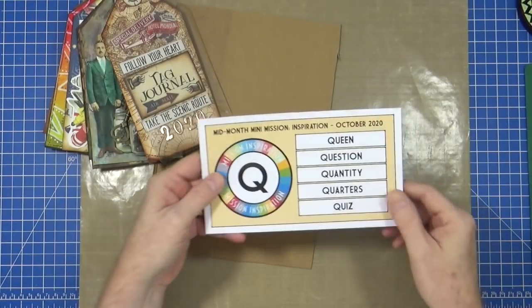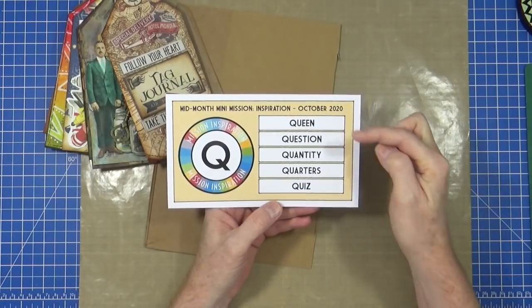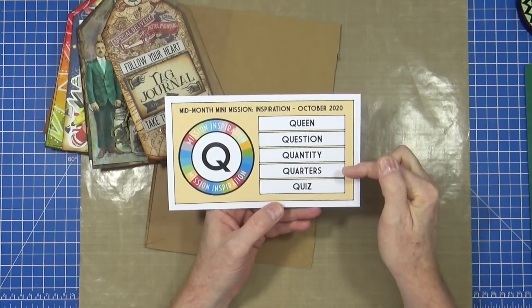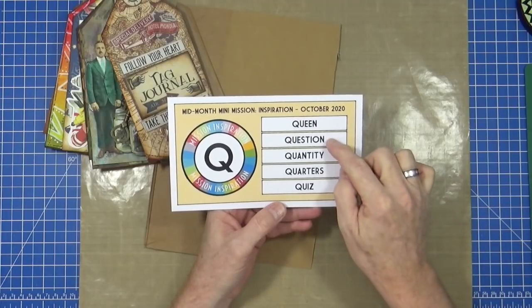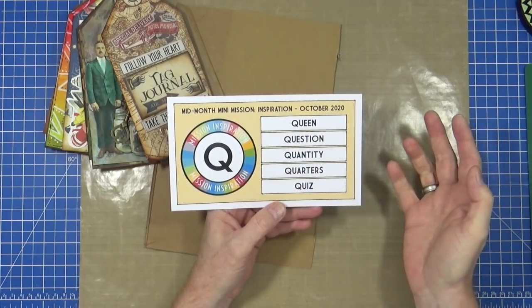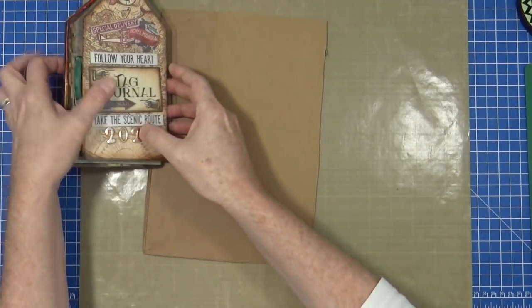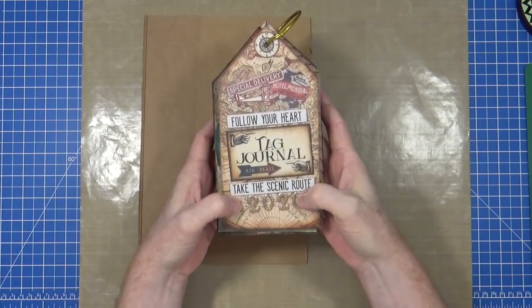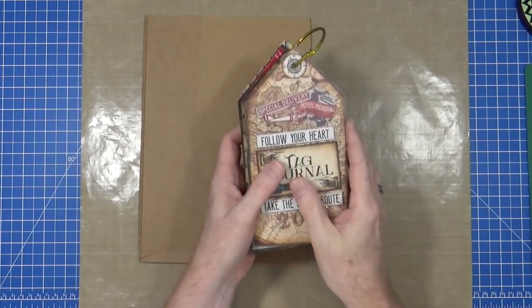So let me turn over to my overhead camera and show you what I'm going to create today. These are the words beginning with the letter Q that we've got for the month of October: Queen, question, quantity, quarters, and quiz. I'm going to go for the word question for my art tag, which is what I normally do for the mid-month mini mission inspiration. This is my tag journal for 2020 and I'm all ready to get started.